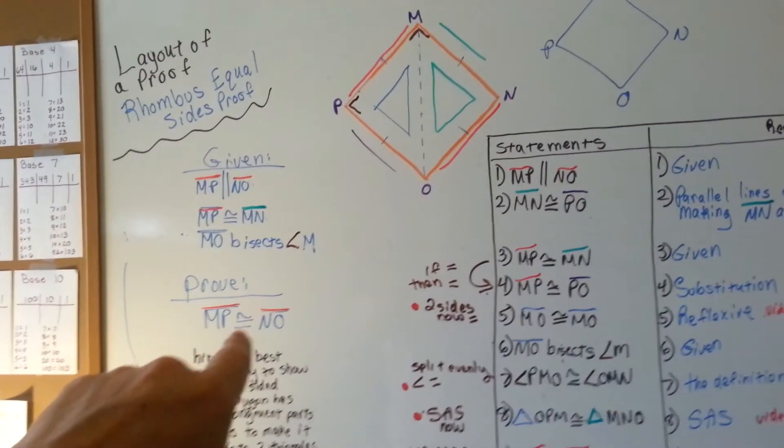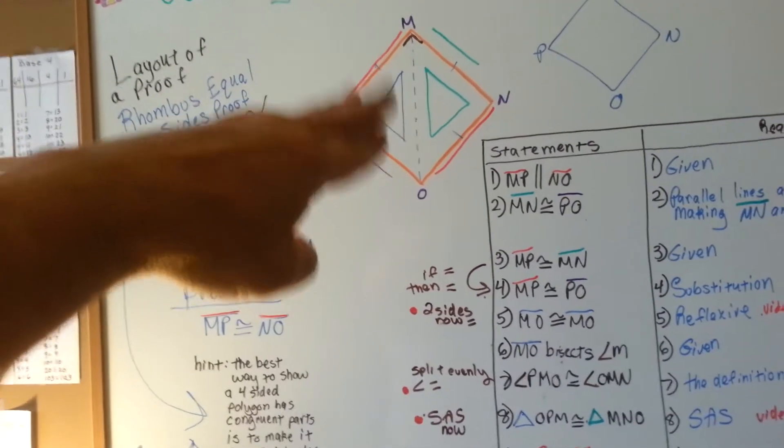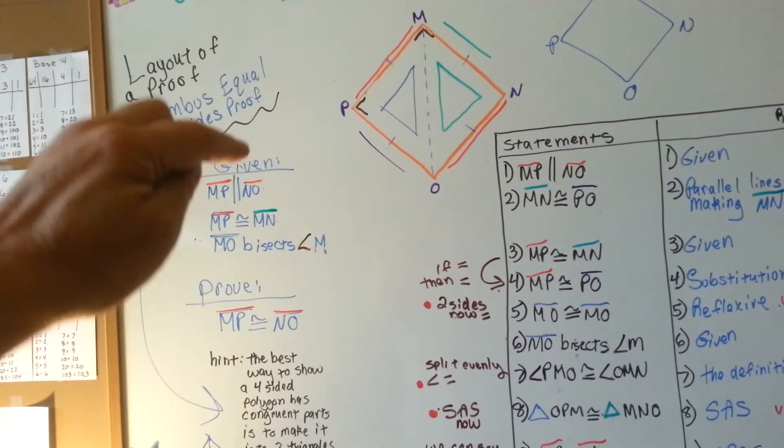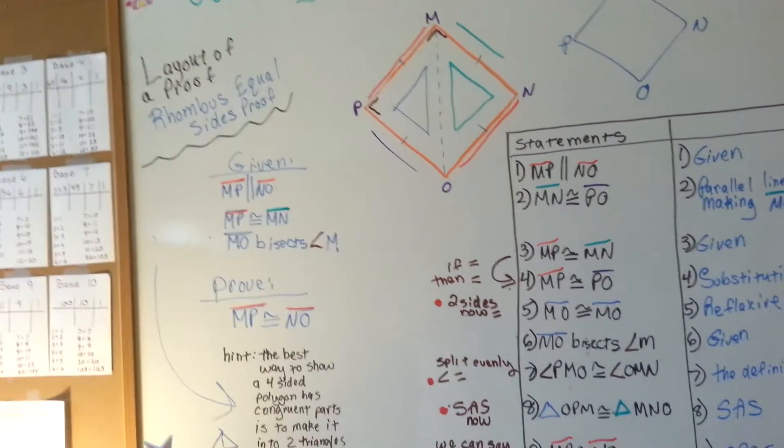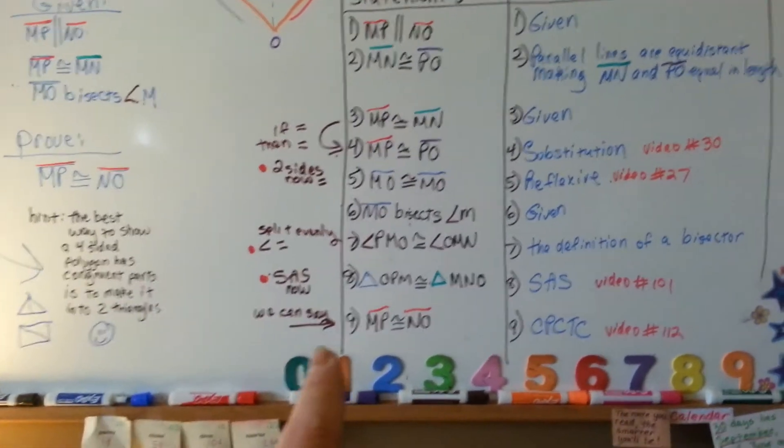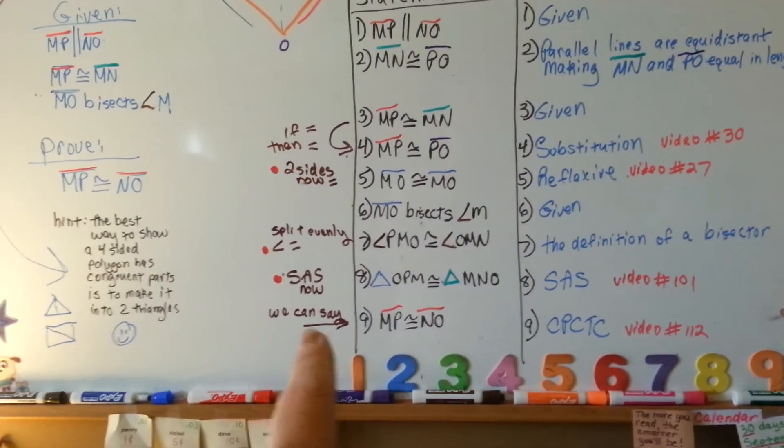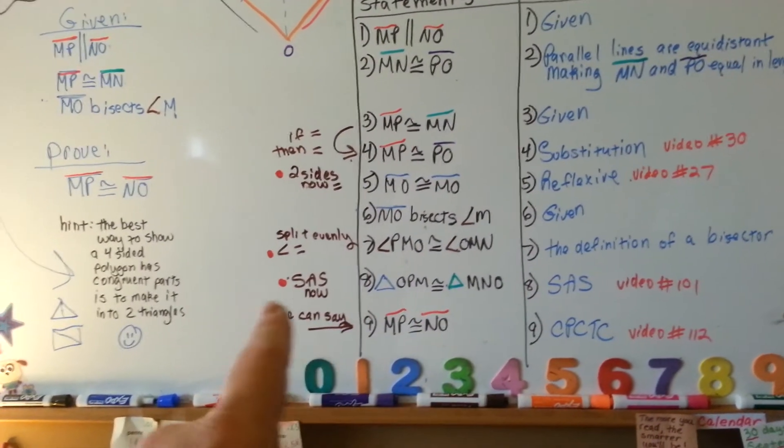Sorry, it's getting fuzzy. Do you understand? That if this triangle is congruent to this triangle, then MP has to be congruent to NO because of the corresponding parts of congruent triangles and we've proven that the triangles are congruent.